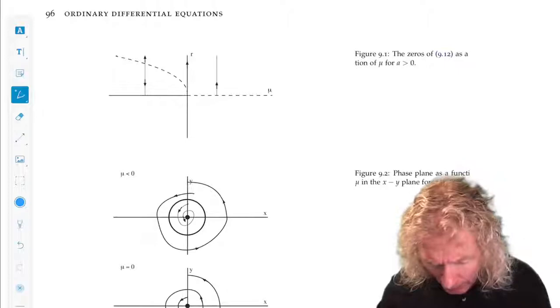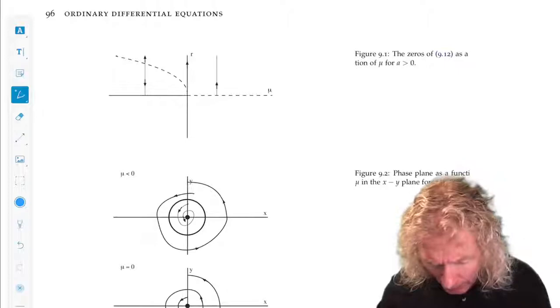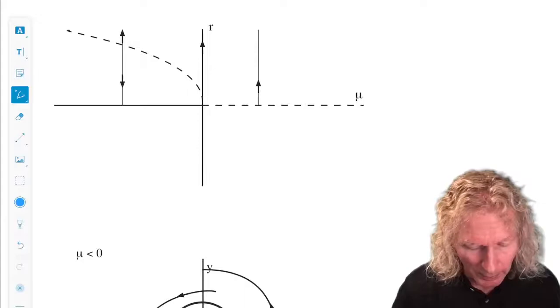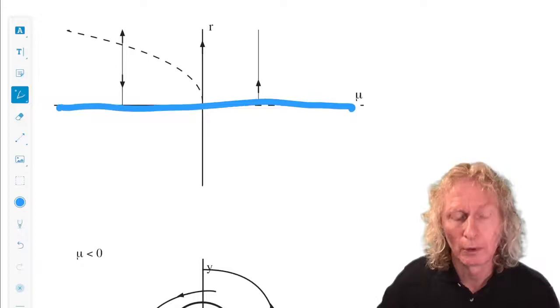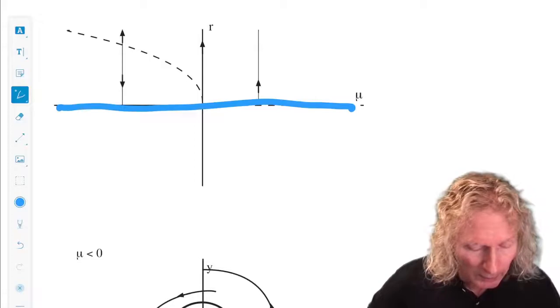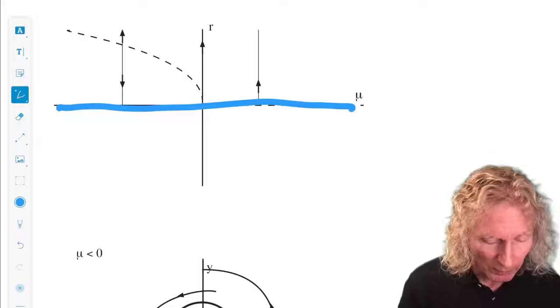Okay, for a greater than zero, remember that the origin is always a fixed point, r equals zero. And it's stable for mu less than zero, unstable for mu greater than zero. And we see that there is an unstable branch of equilibria of the r-dot equation.